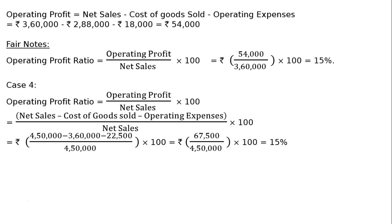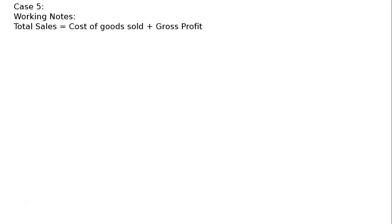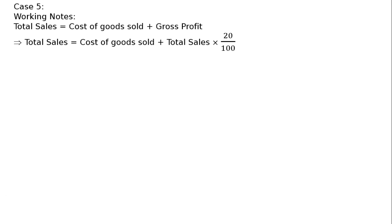Case 5: cost of goods sold (cost of revenue from operations) is given. Gross profit is 20% on sales, but sales is not given. Operating expenses is given and we need to find the operating profit ratio. Working notes: total sales is equal to cost of goods sold plus gross profit. Through this equation we can find sales. Total sales is equal to cost of goods sold plus total sales into 20%, because gross profit is 20% of total sales.